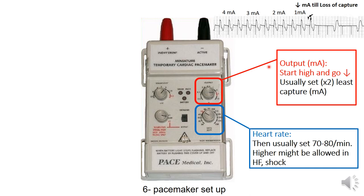We start the output at the highest setting — 12 milliamperes — then decrease step by step: 4 mA, 3 mA, 2 mA, 1 mA. At 1 mA we lose capture, meaning the pacemaker spike on the ECG is not followed by a QRS complex — the ventricle is not responding. At this point, we set the output at double the threshold at which we lost capture. In this example, loss of capture occurred at 1 mA, so we set it at 2 to 3 mA.